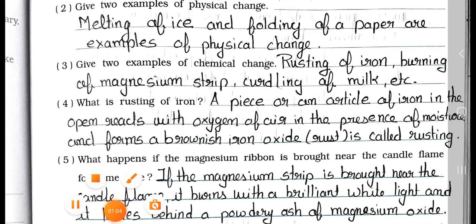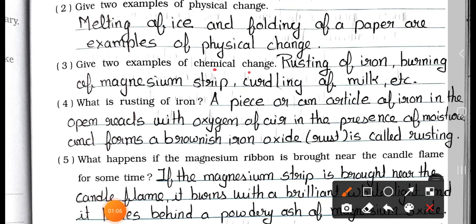Question number 3: Give 2 examples of chemical change. Answer: Rusting of iron, burning of magnesium strip, curdling of milk etc. are examples of chemical change.